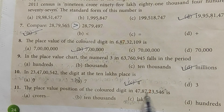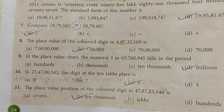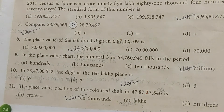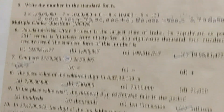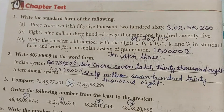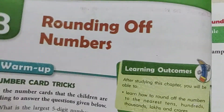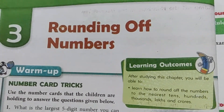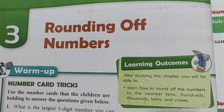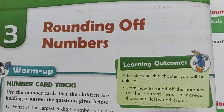We have completed all the check questions under the chapter test heading, and with this, chapter 2 is also completed. In our next video, we will start chapter 3, which is 'Rounding Off Numbers'. Prepare for chapter 3, and until then revise the questions of chapter 2. Bye bye!